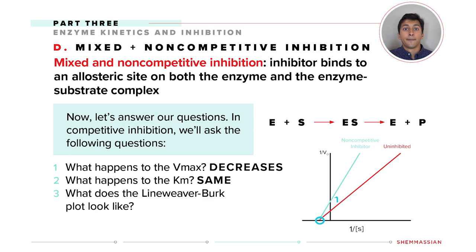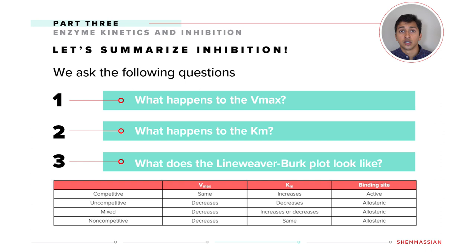We've covered a lot of important material, and this table nicely summarizes what happens in our major forms of enzyme inhibition. While you can memorize this table, it's important to know how we got to each of these values, as that demonstrates you understand other important enzyme-related topics.